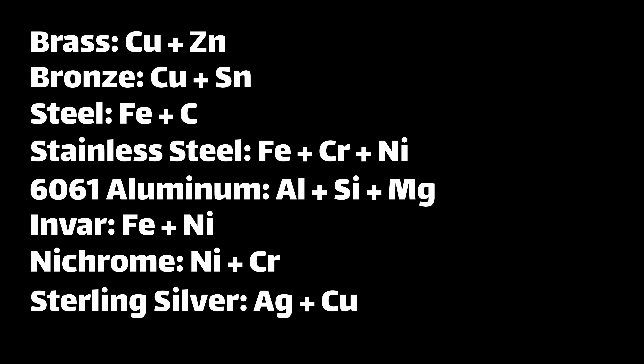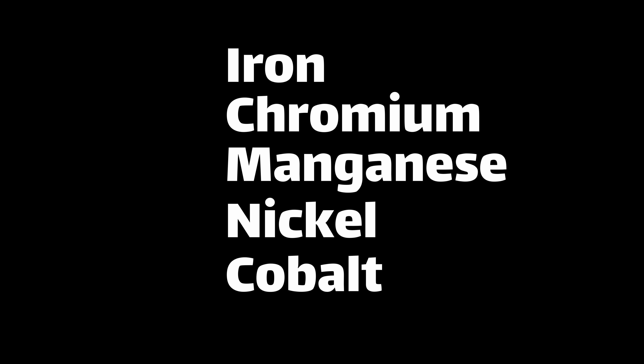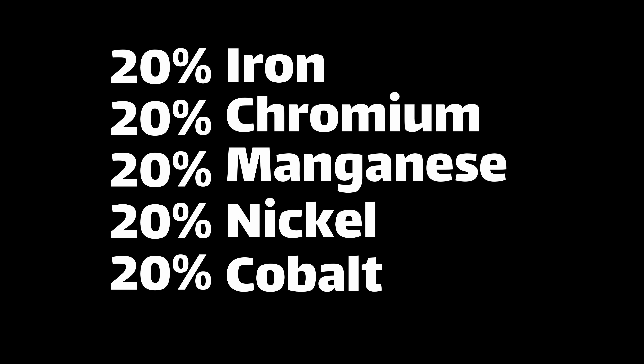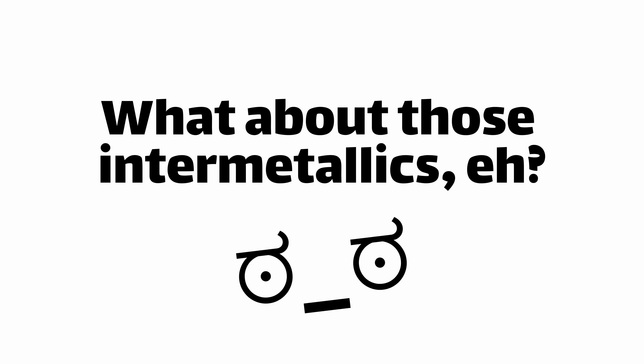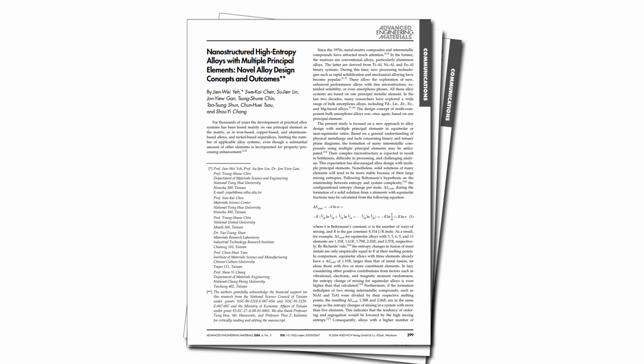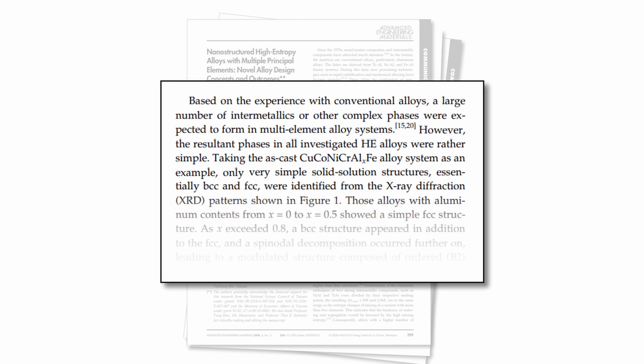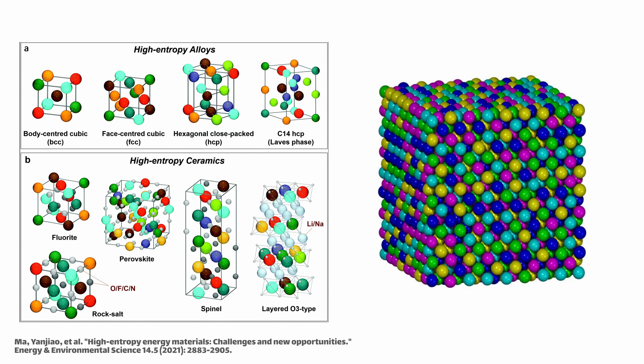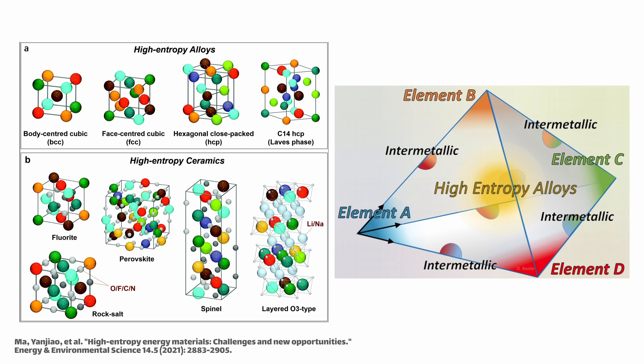Instead of having one major constituent, we instead have five or more elements that are all in equal atomic proportions. On the surface this seems kind of ridiculous based on everything I just described. But researchers found that for certain elements, this random mixture just forms a cubic structure as if it was a single element — instead of getting a bunch of intermetallics or even separating into distinct phases, you get just a unified alloy.